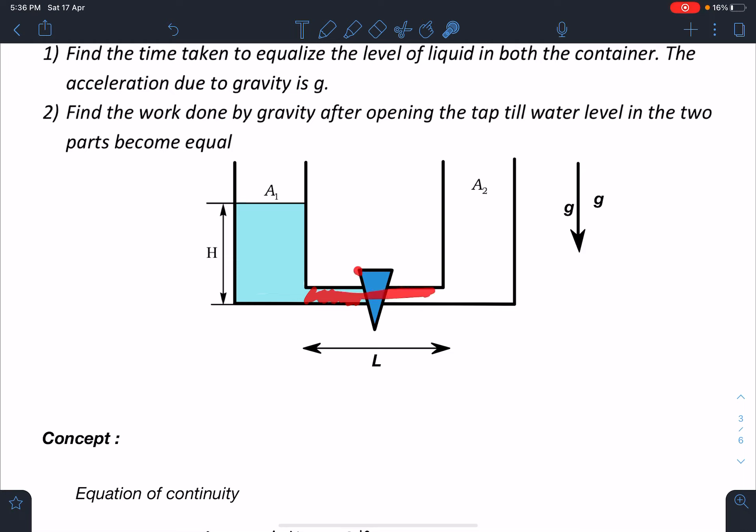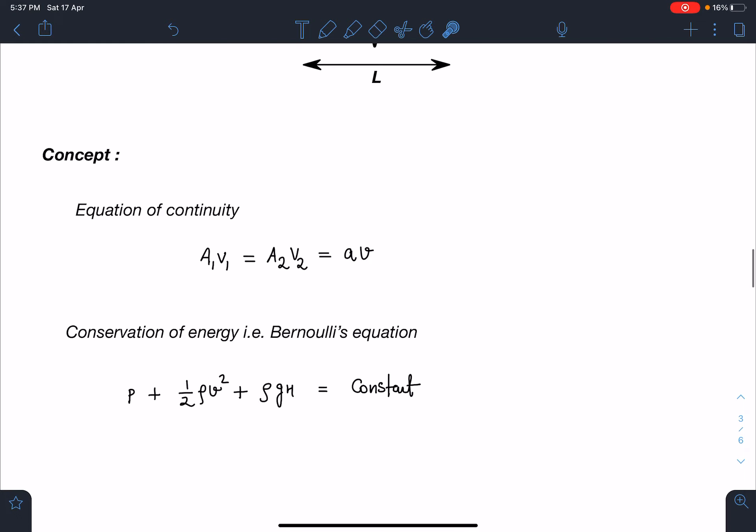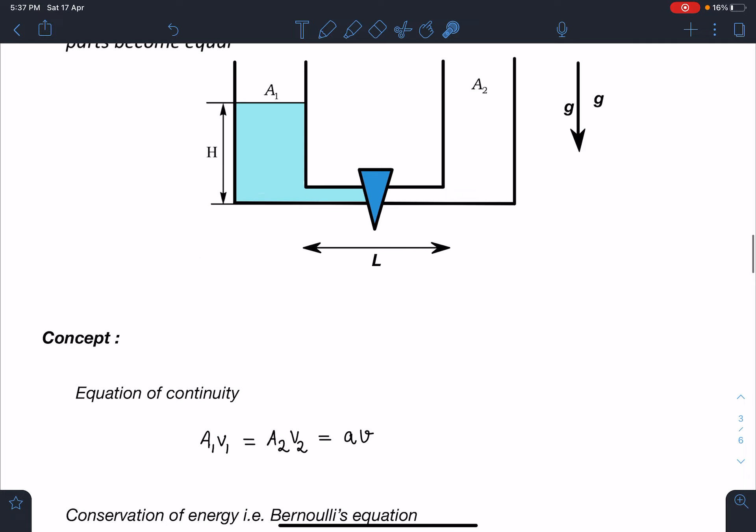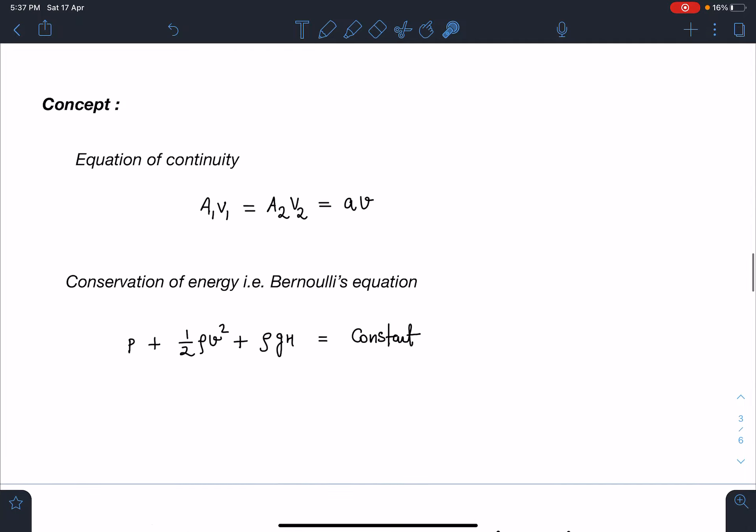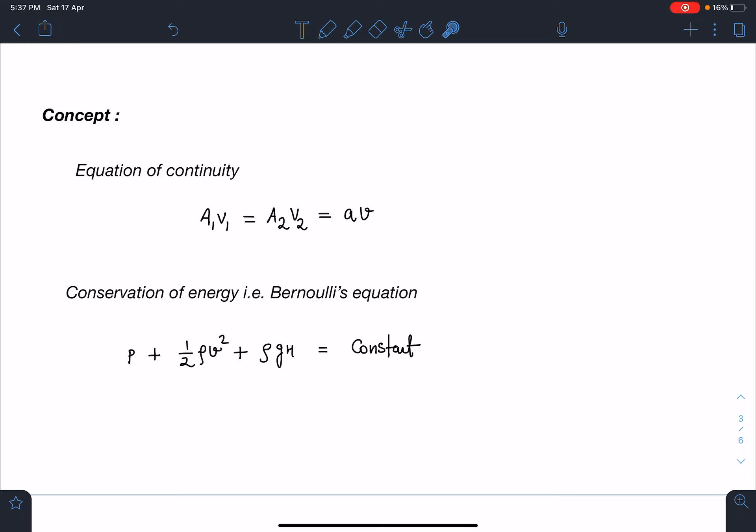Once we remove this tap, the water from this side will start flowing here and we have to find out the time after which the level will become equal. Concept wise you can see equation of continuity we can use in the three parts - the two vertical cylinders and the connecting pipe. So A1v1 equals A2v2 equals small a times v. This will be one of the equations for us. And number two will be the conservation of energy, that is Bernoulli's equation: p + ½ρv² + ρgh is also going to be constant.